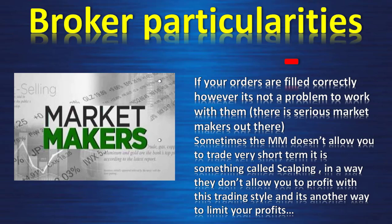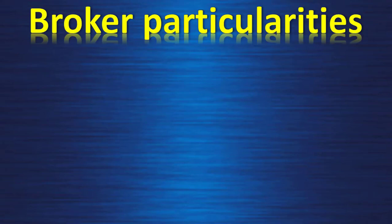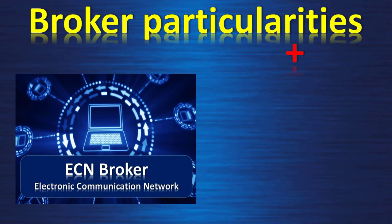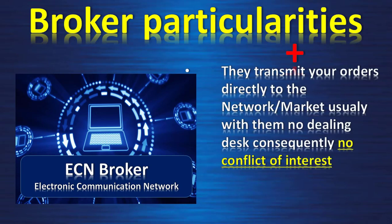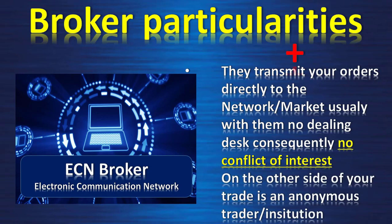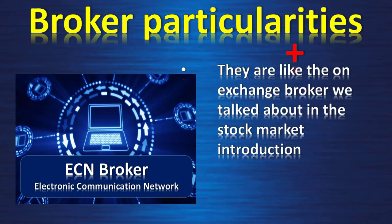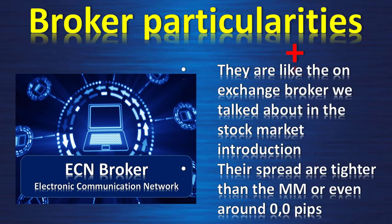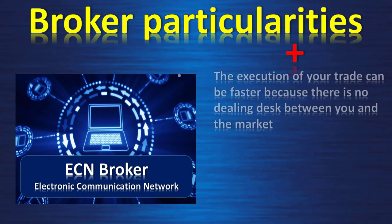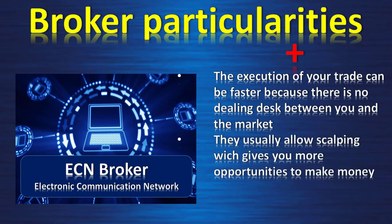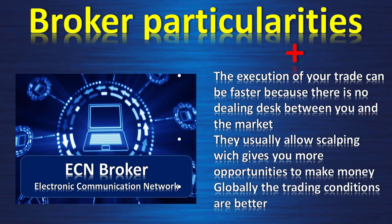Now let's look at the other side: the ECN broker — Electronic Communication Network. They transmit your orders directly to the network market, usually with no dealing desk. Consequently, there is no conflict of interest. On the other side of your trade is an anonymous trader or institution. Their spreads are tighter than the market maker, or even around zero pips. The execution of your trade can be faster because there is no dealing desk between you and the market. They usually allow scalping, which gives you more opportunities to make money.